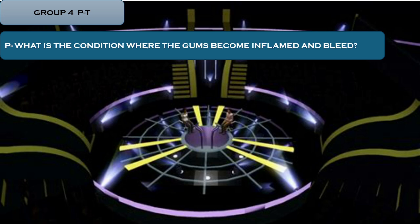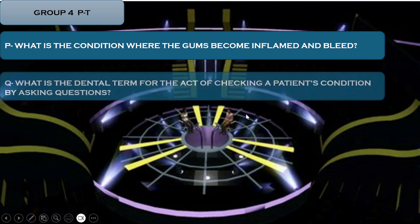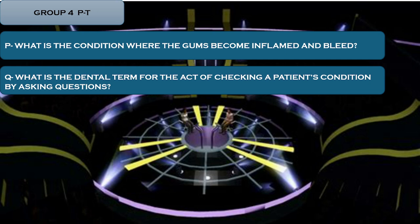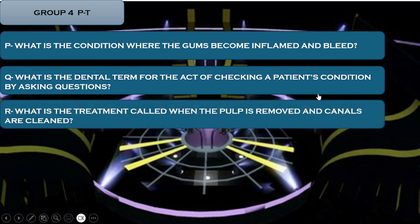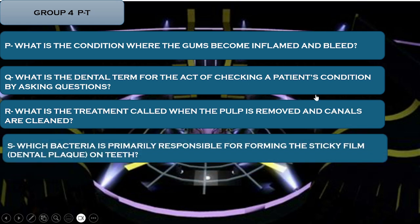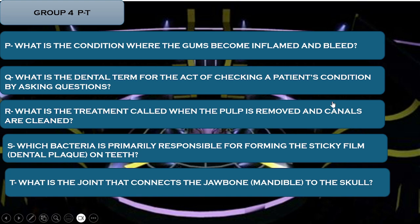What P is the condition where the gum becomes inflamed and starts to bleed? What Q is the dental term for the act of checking a patient's condition by asking questions? What R is the treatment called when the pulp is removed and the canals are cleaned? What S is the bacterium most associated with tooth decay? And finally, what T is the joint that connects the jawbone or mandible to the skull?